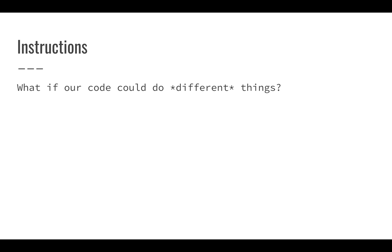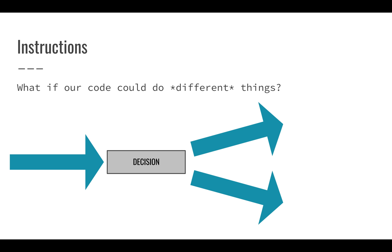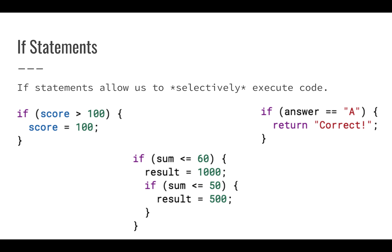So what if your code could do different things? We have this kind of arrow which represents the sequential execution of our statements. But what if we get to a decision? What if we could make a decision and then have different possibilities of how we run our program? We could have different statements that occur based on different decisions. So we have this thing in Apps Script called if statements, and we have these in JavaScript, C, Python, and a lot of different languages. Basically, an if statement allows us to selectively execute our code.